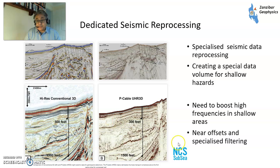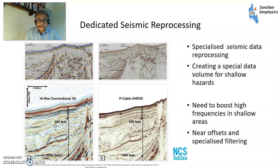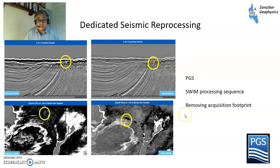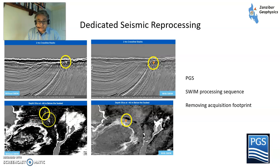You can also have dedicated seismic reprocessing. This is from NCS Subsea, looking at reprocessing data you already have for higher frequencies — looking at the near offsets, trying to de-ghost. You can see the difference between a relatively smooth dataset to a more complicated one. There's also another form of reprocessing from PGS — their SWIM processing sequence — removing the acquisition footprint. The acquisition footprints are horizontal lines which are the lines of the sail direction, making things difficult to interpret. You can see there's a little potential gas pocket that is difficult to see on conventional data but somewhat easier to see on the reprocessed data.